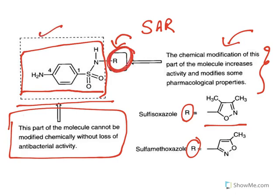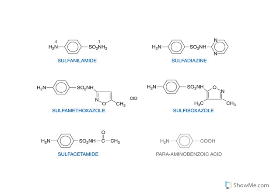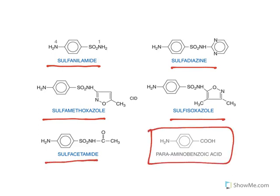By changing the R group, better activity drugs can be obtained. Important drugs include sulfanilamide, sulfadiazine, sulfamethoxazole, sulfaisoxazole, and sulfacetamide. All of them are derivatives of para-aminobenzoic acid, with a sulfonamide group in place of the carboxylic acid.